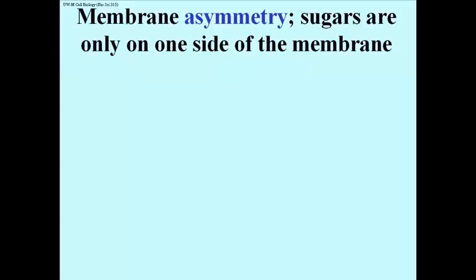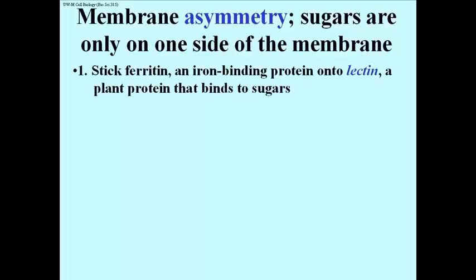Membranes are asymmetric, for example, because the sugars are only on one side of the membrane. Let's take a look at how one demonstrates this membrane asymmetry. If we attach ferritin, an iron binding protein, to a lectin, a plant protein that binds sugars,